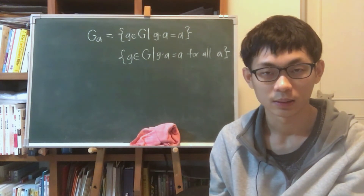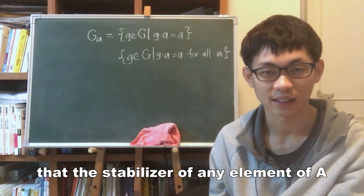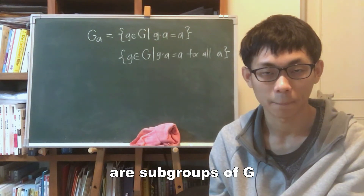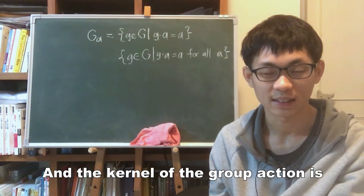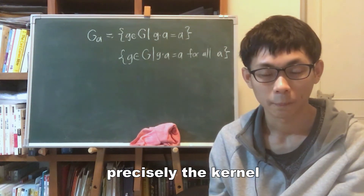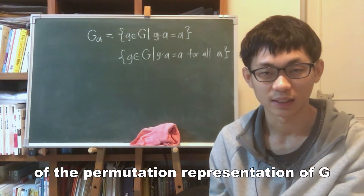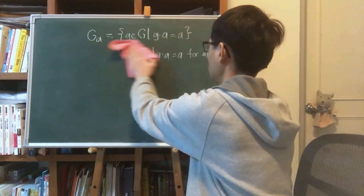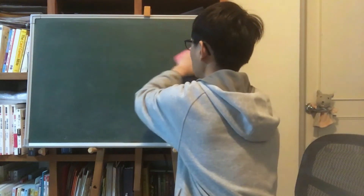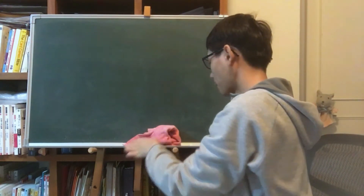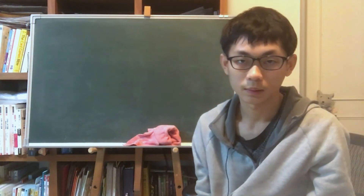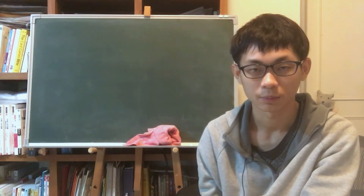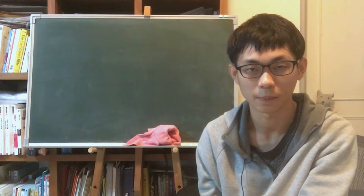It is easy to show that the stabilizer of any element of A and the kernel of the action are subgroups of G. The kernel of the group action is precisely the kernel of the permutation representation of G, and it is clear that the kernel is the intersection of all stabilizers in G.